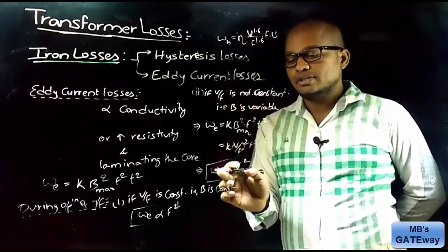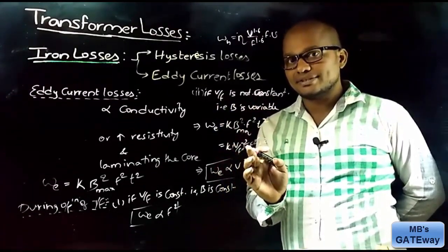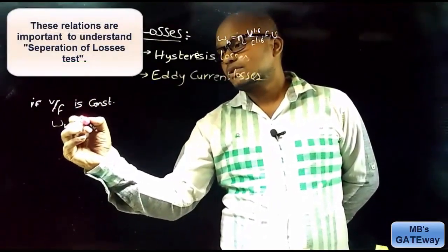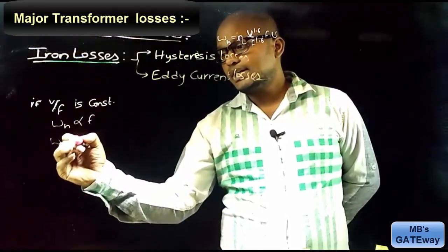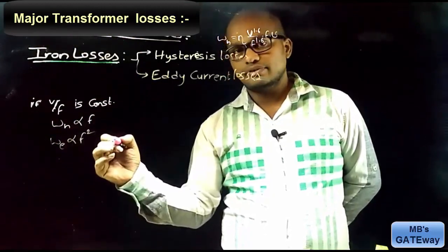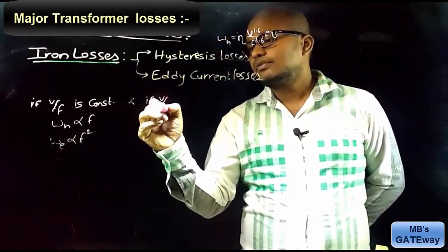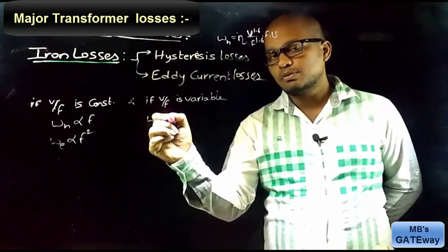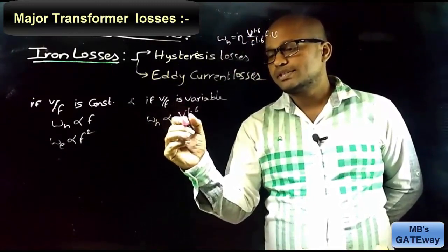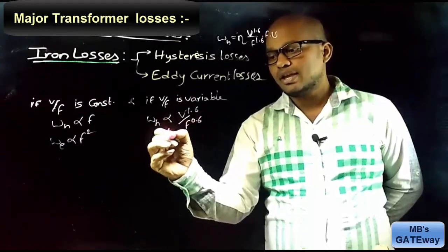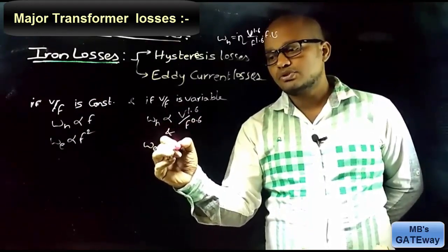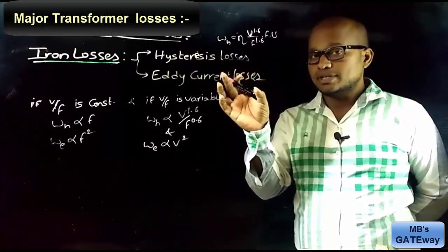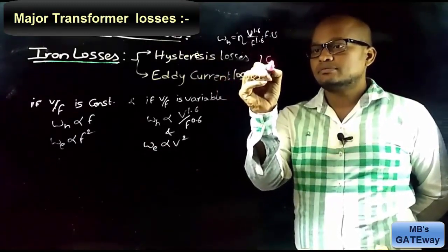To summarize: if the V/F ratio is constant, hysteresis losses are directly proportional to frequency F, and eddy current losses are directly proportional to F². If V/F is variable, hysteresis losses are proportional to V^1.6 / F^0.6, and eddy current losses are proportional to V² and are independent of frequency. Since input voltage is maintained constant, both these iron losses come under constant losses.